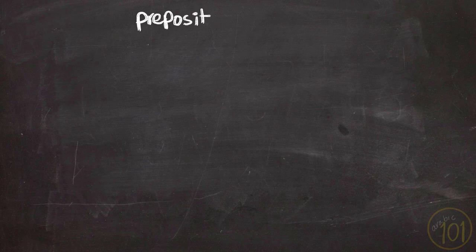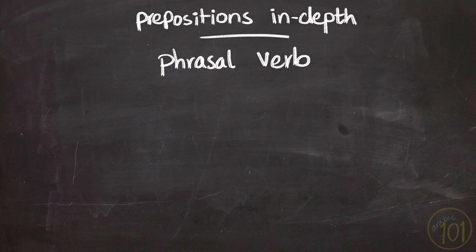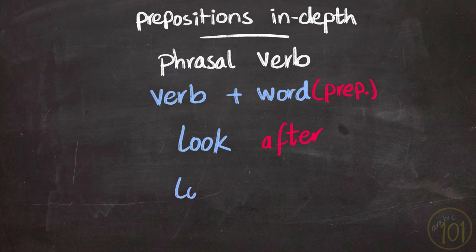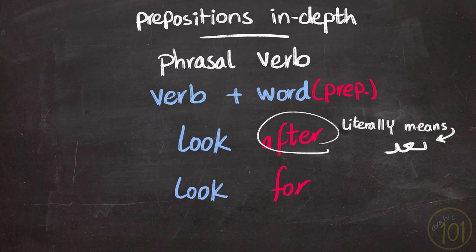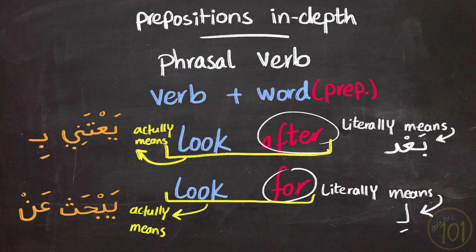Now let's have a deeper look at the prepositions and how they're used in the Holy Qur'an. But before we do that, there is a very important thing we have to talk about: phrasal verbs. Phrasal verbs in Arabic or English are verbs that occur along with another part, like prepositions. For example, 'look after' and 'look for' — these are phrasal verbs. The problem with prepositions used with verbs is that they cannot always be literally translated.